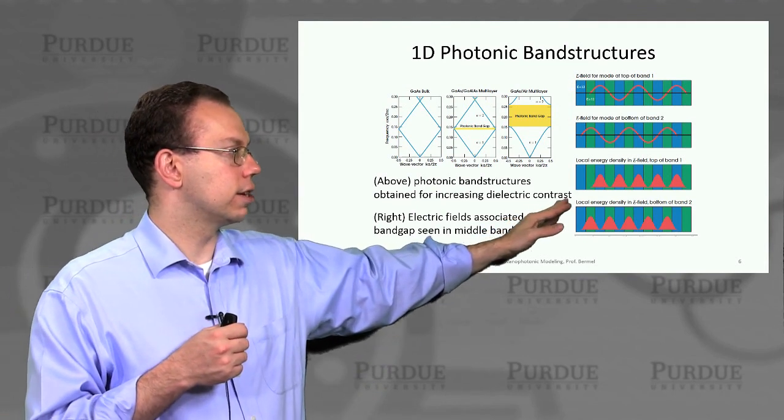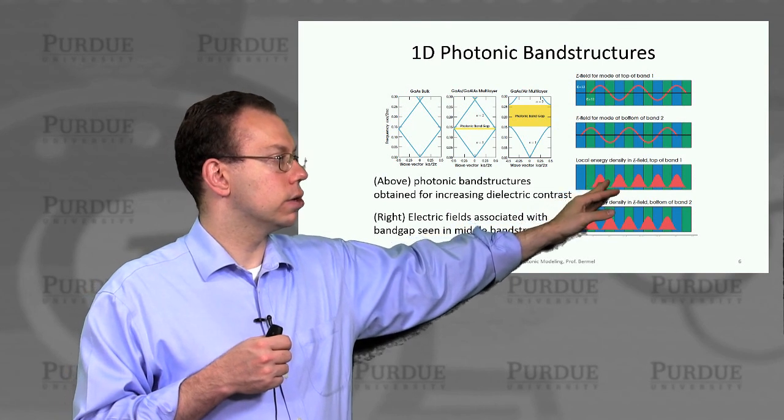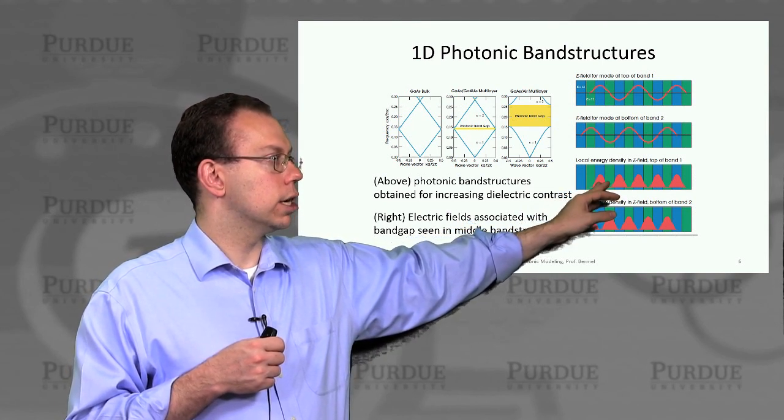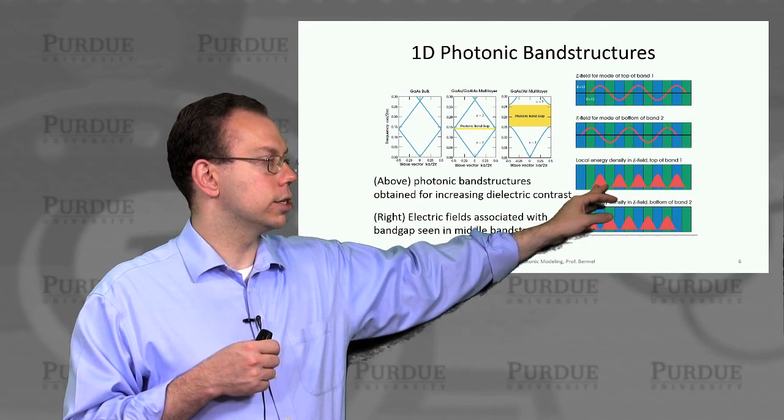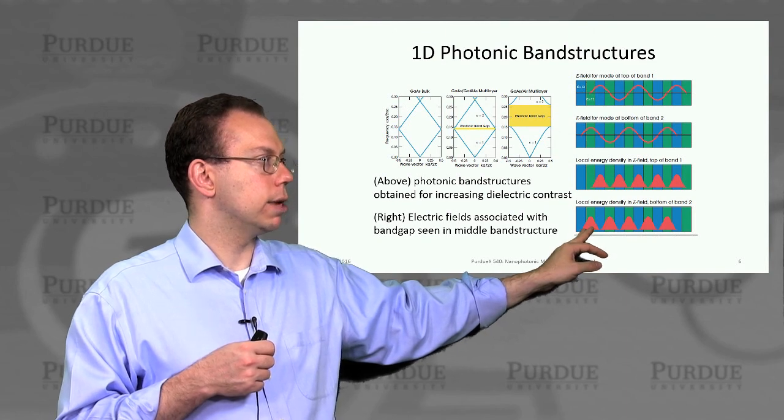nearly degenerate perturbation theory specifically, is that you'll have field localization in the so-called blue regions, which are gallium arsenide, high dielectric,